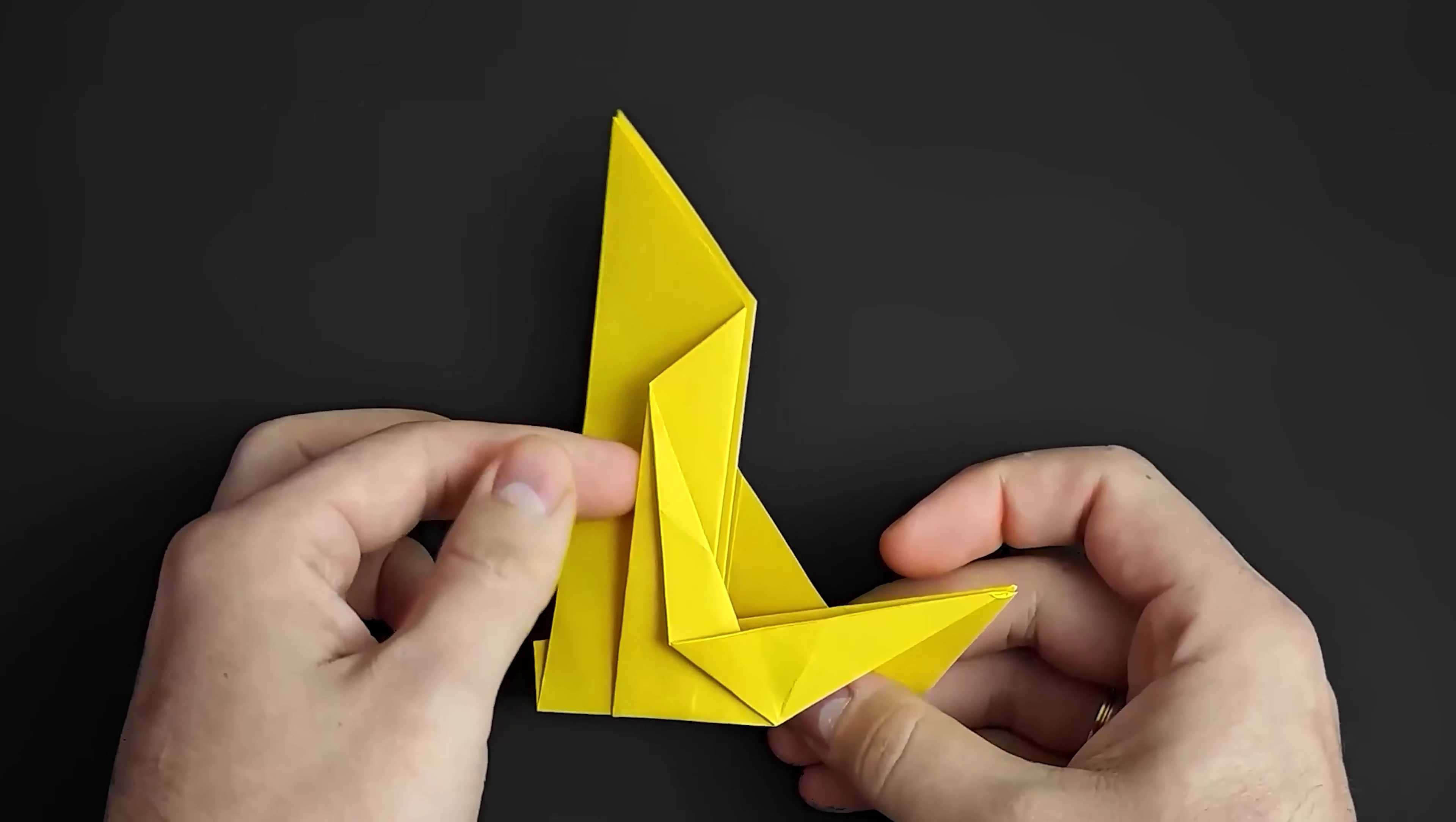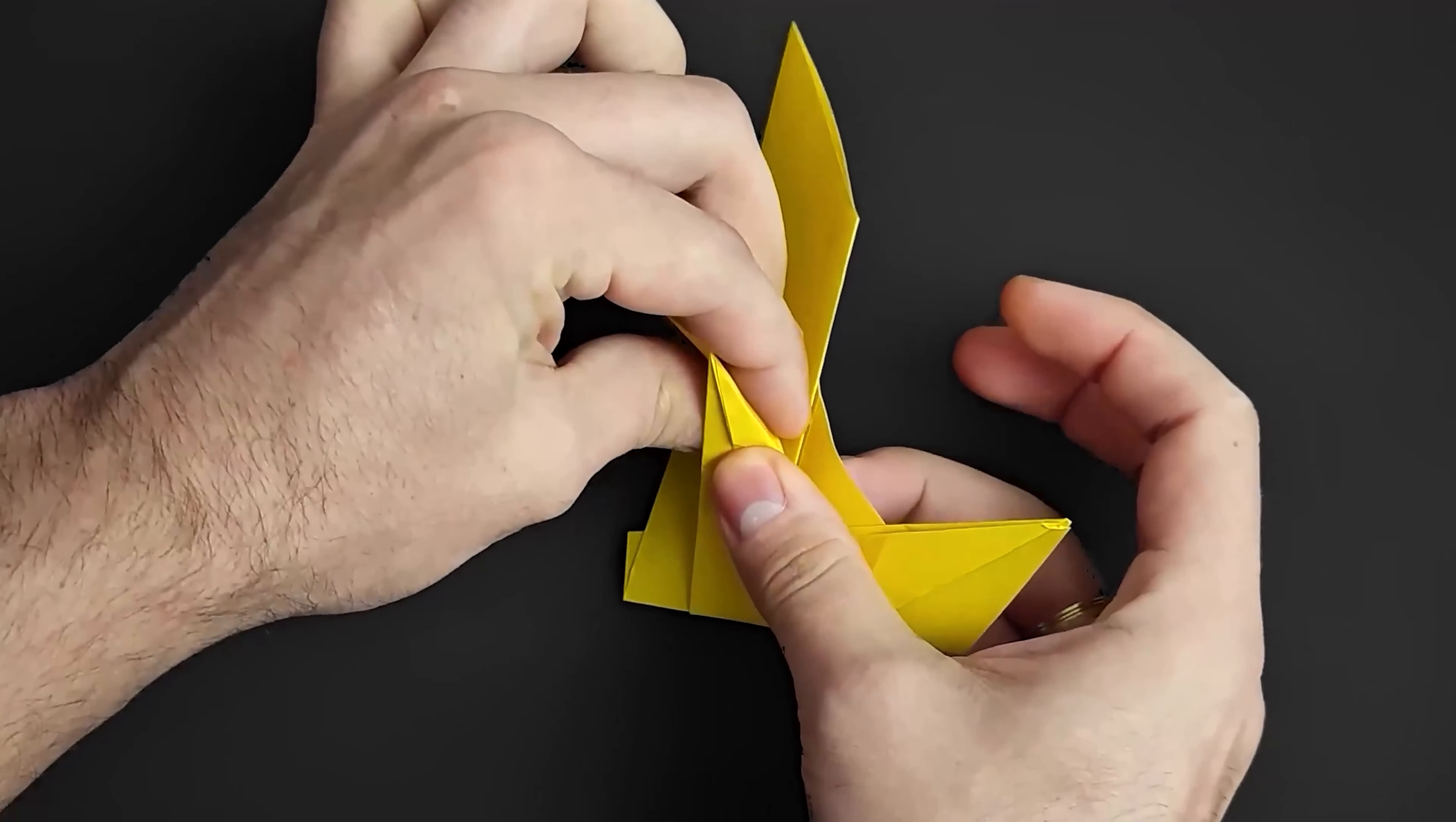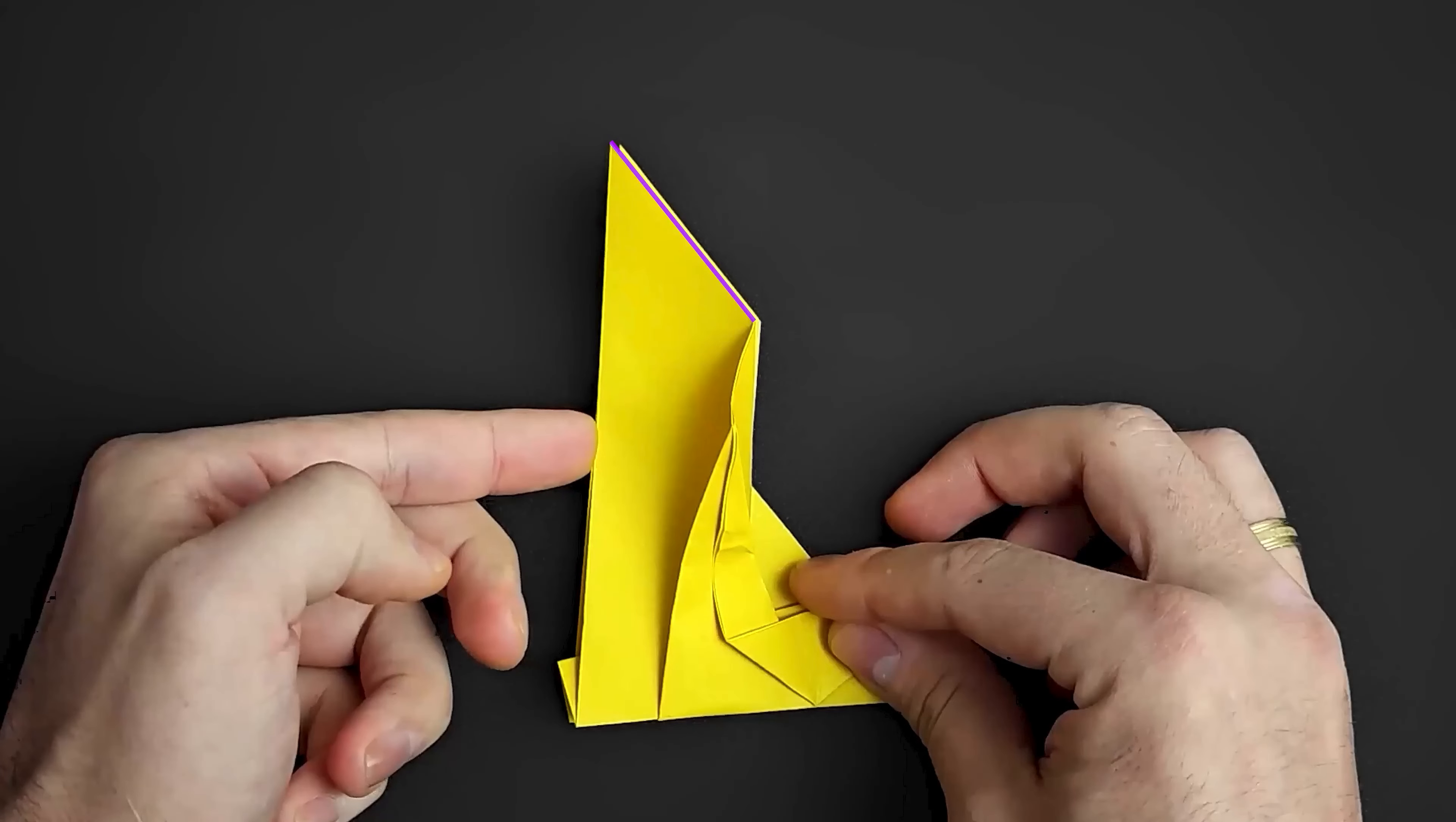Now we need to reinforce this line here. And at the top, we're going to bring the diagonal edge to the vertical on the left.